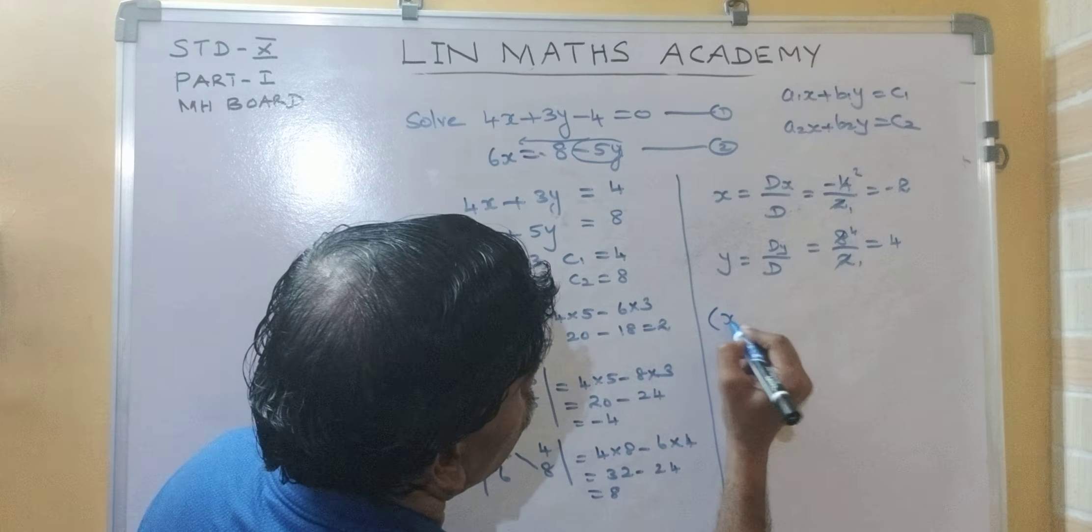What is y? dy upon d equal to minus 50 upon minus 10 equal to 5. So, solution is xy equal to 6, 5.